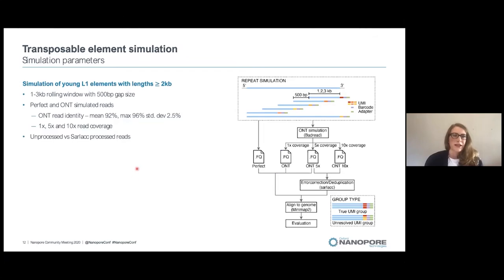We simulated 2kb LINE 1 elements and simulated 1 to 3kb rolling windows over those elements with perfect Oxford Nanopore error rate. We generated 1x, 5x and 10x read coverage and used unprocessed reads or reads which have been processed through our SALAC pipeline. After this, we then aligned these reads to the genome and evaluated the group types, whether they have been grouped in the true UMI groups or have been grouped into unresolved UMI groups.